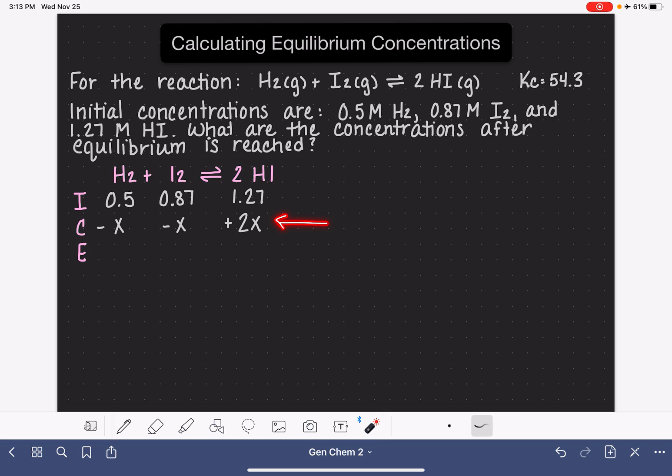And again, when we're filling in the C row, we want to put negative signs with all of our reactants because they're going away. We want to put positive signs with all of our products because we're making them. And we want to maintain stoichiometric coefficients from the balanced equation into this particular row.